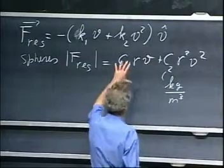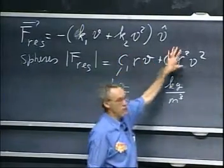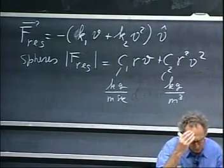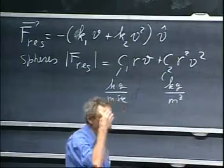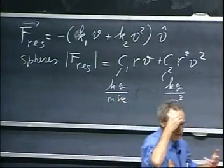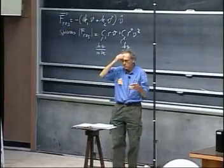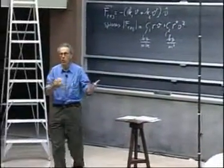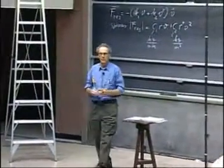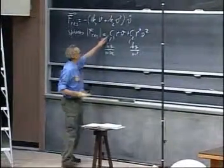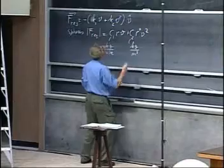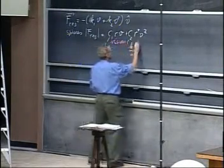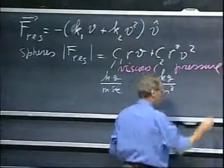We call this the viscous term and we call this the pressure term. The viscous term has to do with the stickiness of the medium. If you take, for instance, liquids, water, and oil and tar, there is a huge difference in stickiness. Physicists also refer to that as viscosity. If you have a high viscosity, it's very sticky, then this number c1 will be very high. So this we call the viscous term and this we call the pressure term.